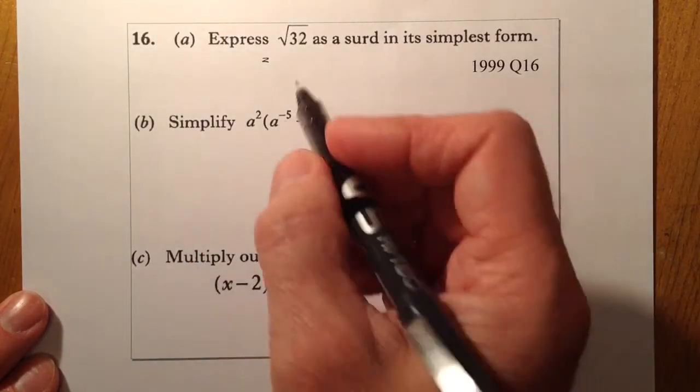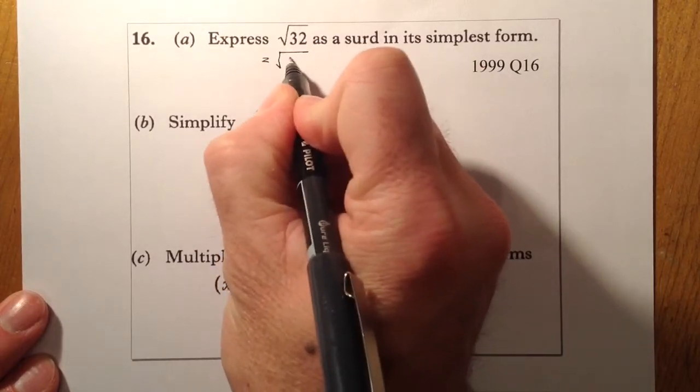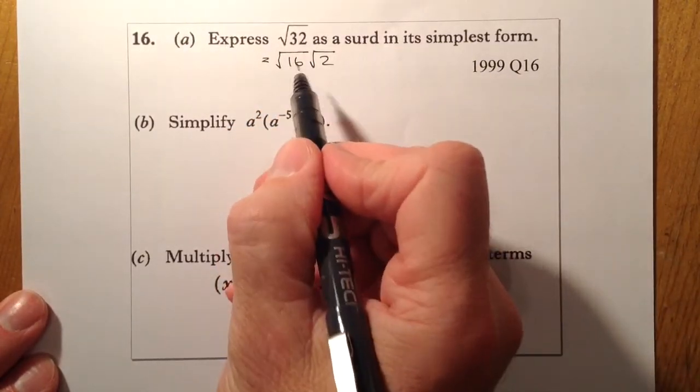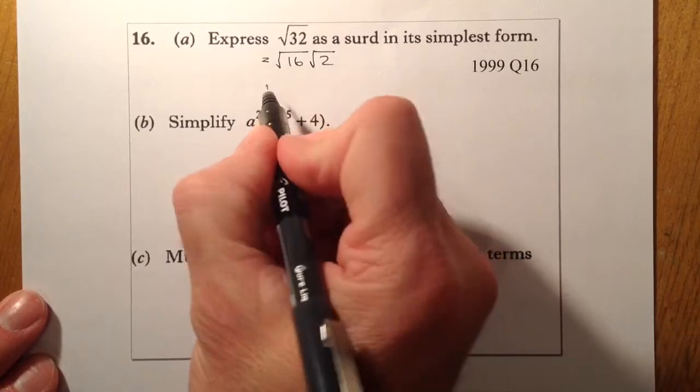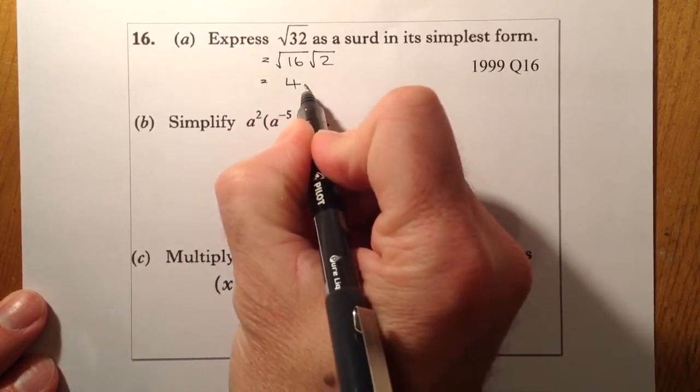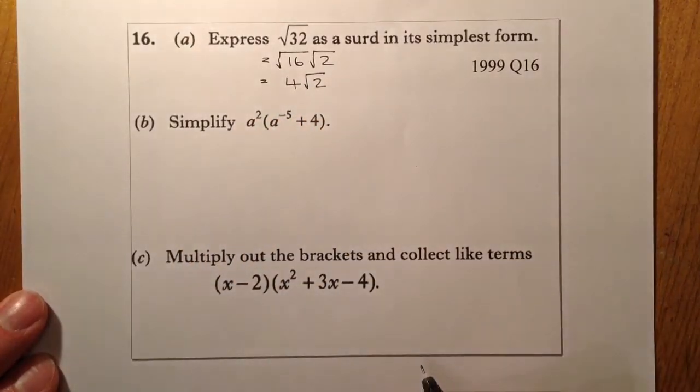What I would be looking for is root 16 times root 2. So I'm looking for the biggest square number that I can use. So from there, what I've got there is 4 root 2 as a final answer.